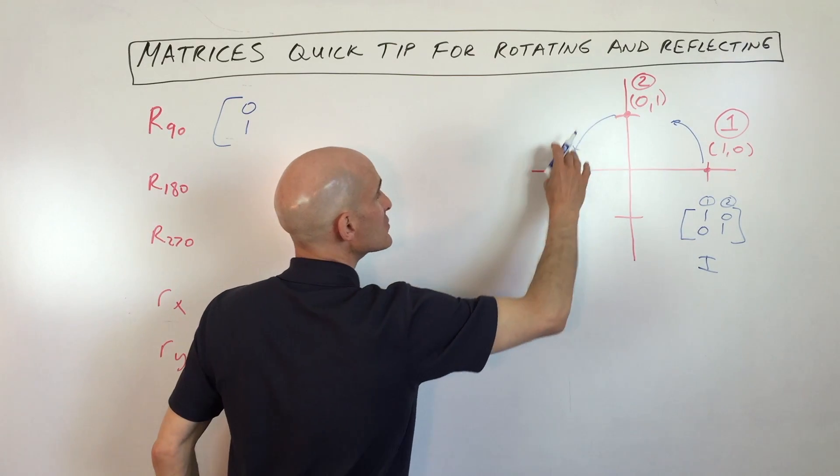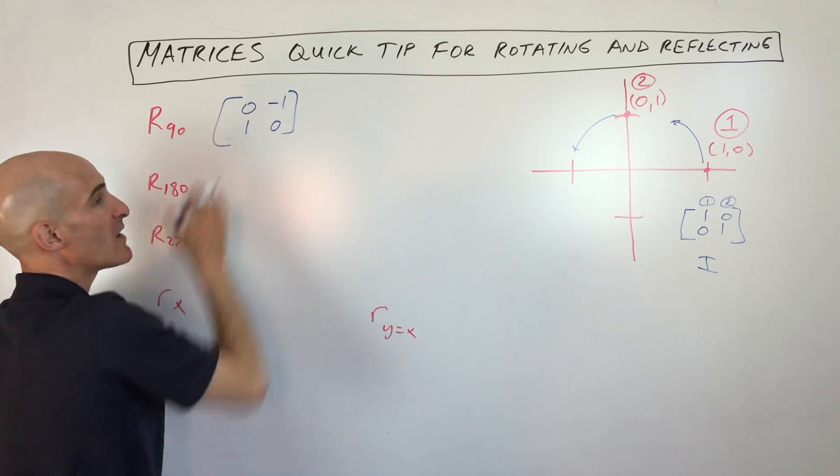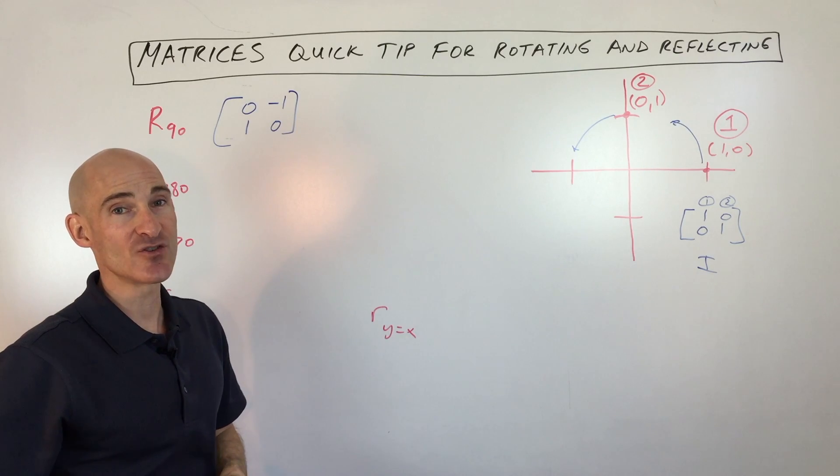Point number two, zero, one, is going to move to this point over here, which is negative one, zero. So this matrix is going to be the matrix we want if we want to rotate 90 degrees.